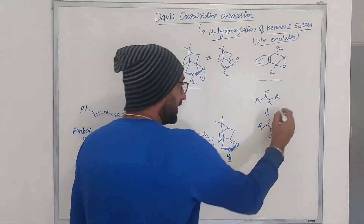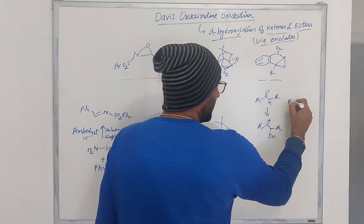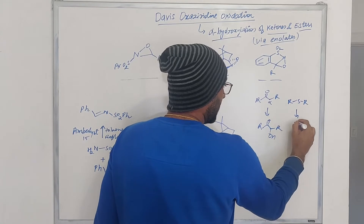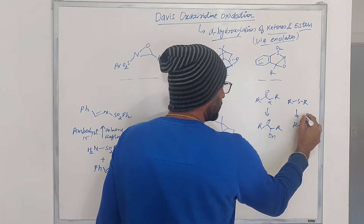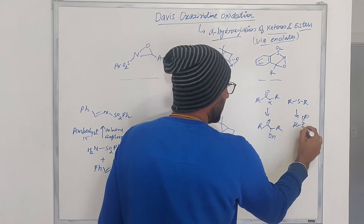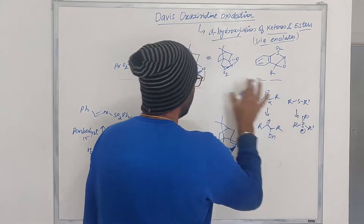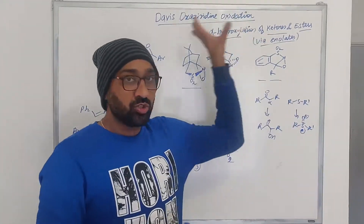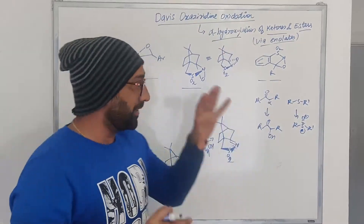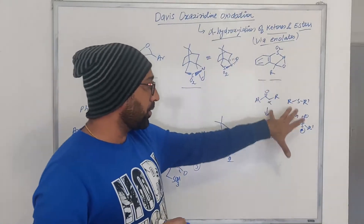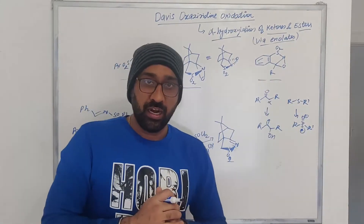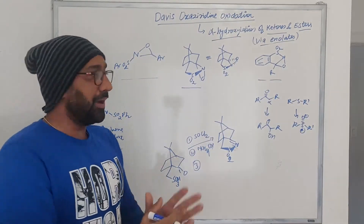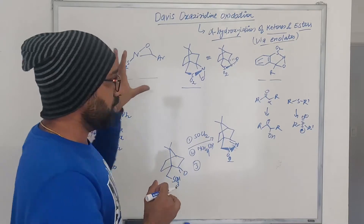Apart from that, if you have a sulfide and you want to convert it to a sulfone, you can also do that enantioselectively using such reagents. But in this video we are going to specifically talk about the alpha hydroxylation.